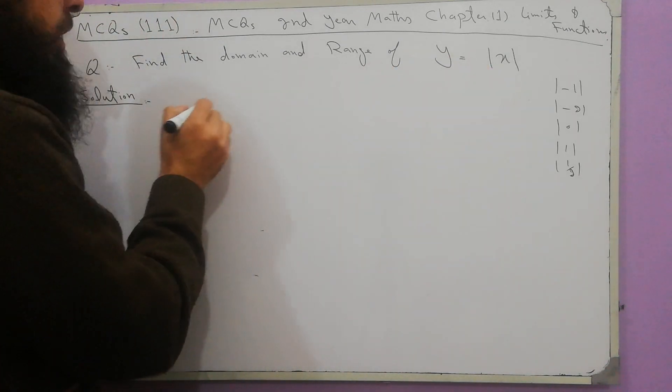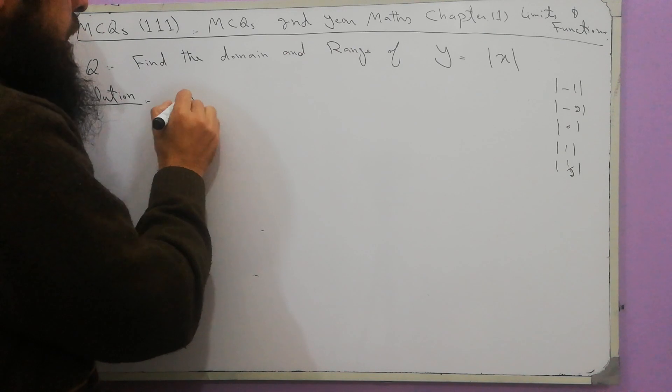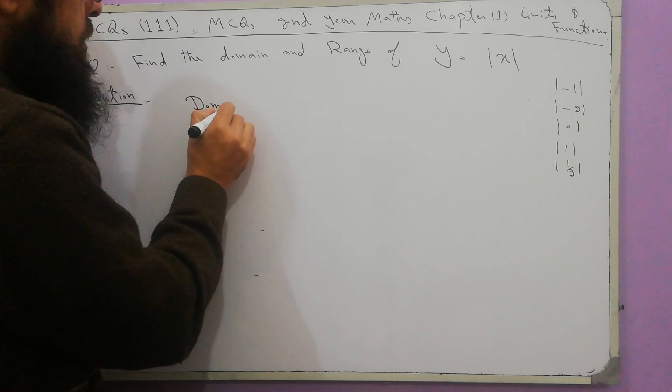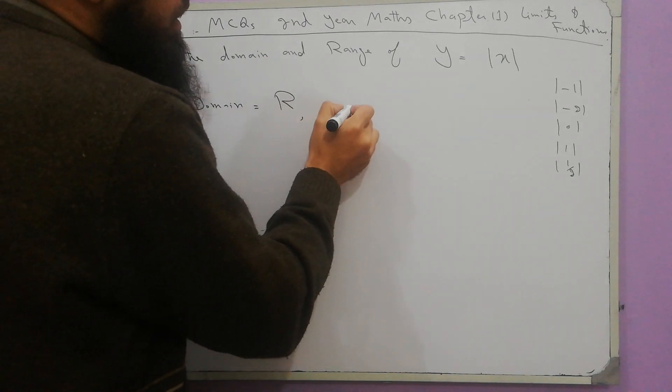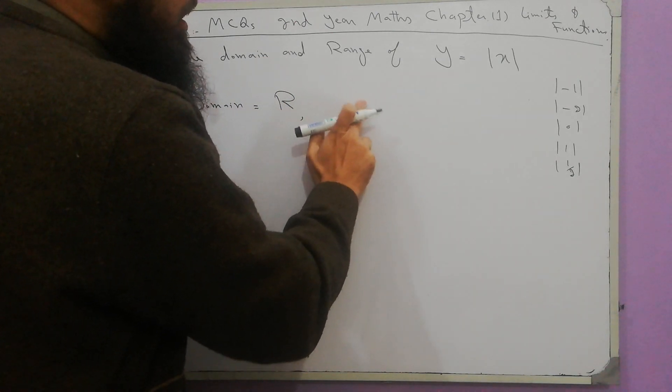Domain of this function is all real numbers. Domain is equal to all real numbers or real numbers, all real numbers.